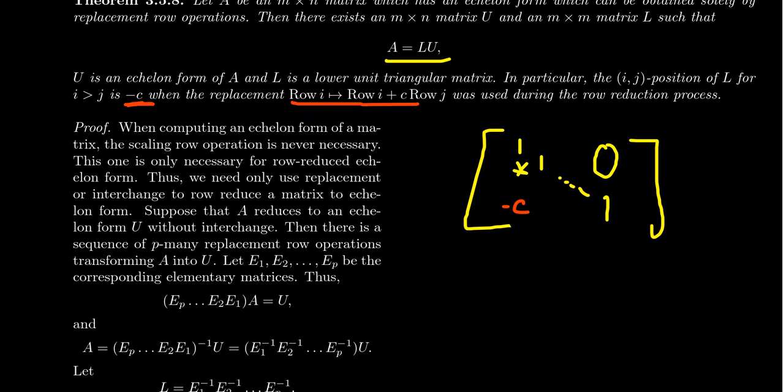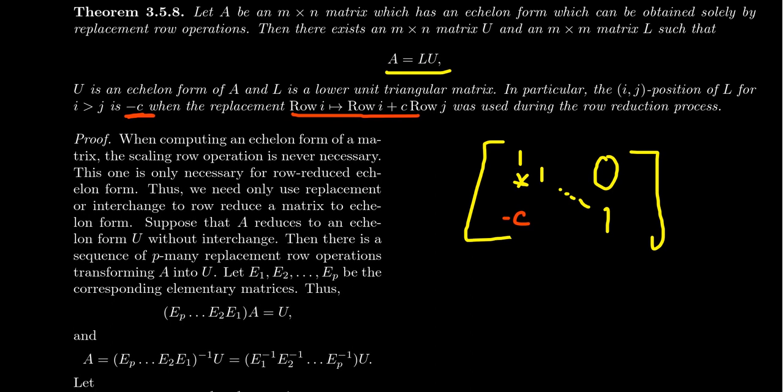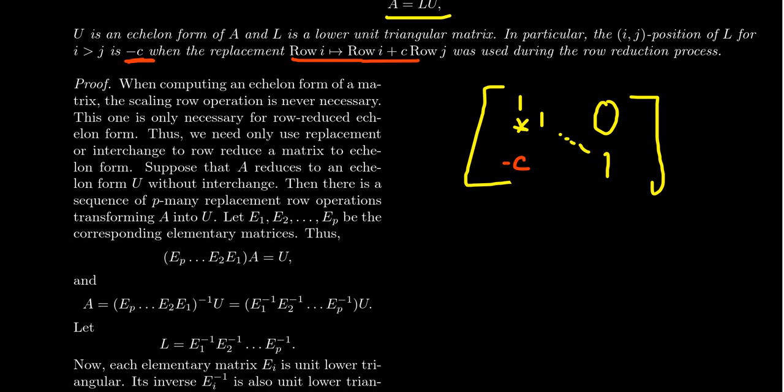This is called the LU factorization. The proof behind it really comes from the elementary matrix factorization from the previous lecture. When computing the echelon form of a matrix, the scaling operation is never actually needed — scaling is not required until the backwards phase of Gauss-Jordan elimination. The forward phase does not require scaling whatsoever. Sometimes interchange might be necessary in the forward phase, but for this theorem we're making the assumption that interchange is not necessary.